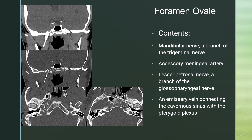Foramen ovale includes the mandibular nerve, the accessory meningeal artery, the lesser petrosal nerve, and an emissary vein connecting the cavernous sinus with the pterygoid plexus. On the coronal view, you can see foramen ovale as a defect within the skull base. It can be straight up and down or go somewhat at an angle. Here is Meckel's cave with its CSF density above that defect in the skull base, which is foramen ovale. On the axial images, you are looking for a well-circumscribed peripherally sclerotic foramen anterior to the tip of the petrous bone at the level of the clivus. Here is foramen ovale on the right, and here is foramen ovale on the left.